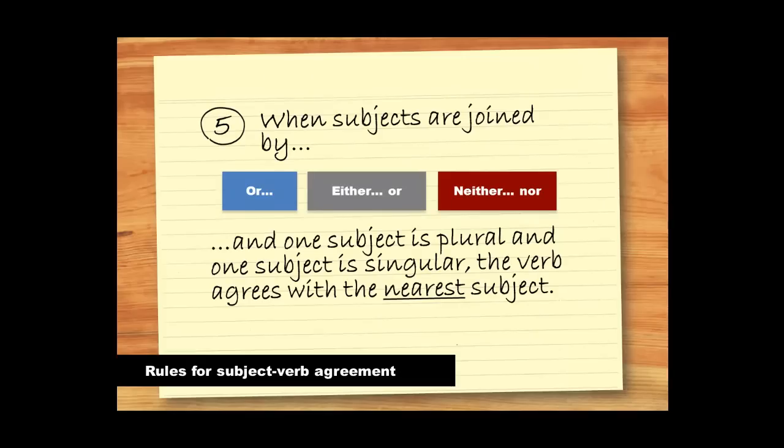Finally, when subjects are joined by any of these verbs, and one subject is plural and the other is singular, the verb agrees with the nearest subject.